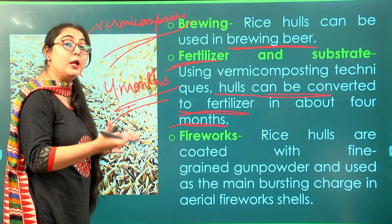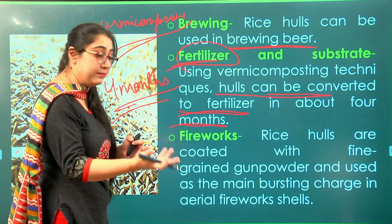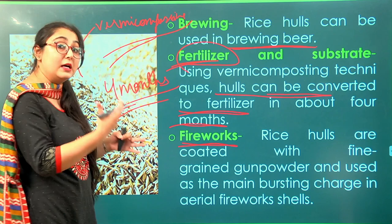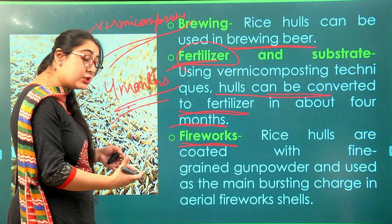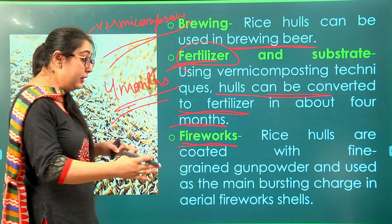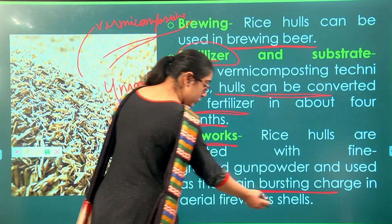Interestingly, husk even finds use in fireworks. It can be coated with gunpowder and used as a bursting charge in fireworks. It is added into fireworks shells after coating with gunpowder.